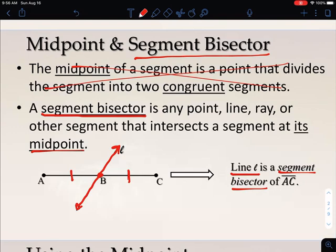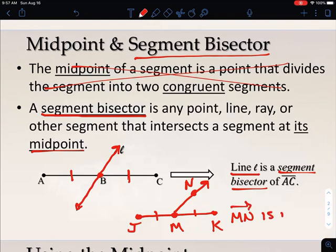You might also see pictures where you have your segment JK, and then they have a midpoint M. They're saying these two pieces are identical, and then they might have just a ray that comes off to one side. So in this case, ray MN is a segment bisector because it cuts line segment JK in half. Anytime anything cuts a segment in half, we call that a segment bisector. If it's just the point on its own, we call that a midpoint as a special name.